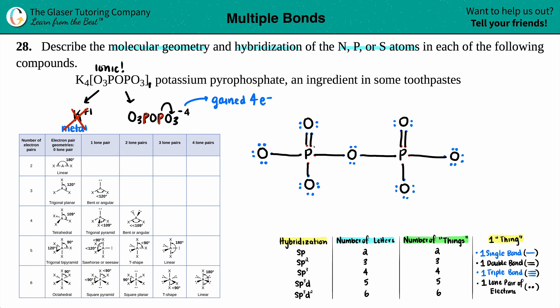There are two phosphorus atoms, but they look completely identical — each has three single bonds and one double bond. So it doesn't really matter which phosphorus we're talking about. Let's find the geometry of one of them.